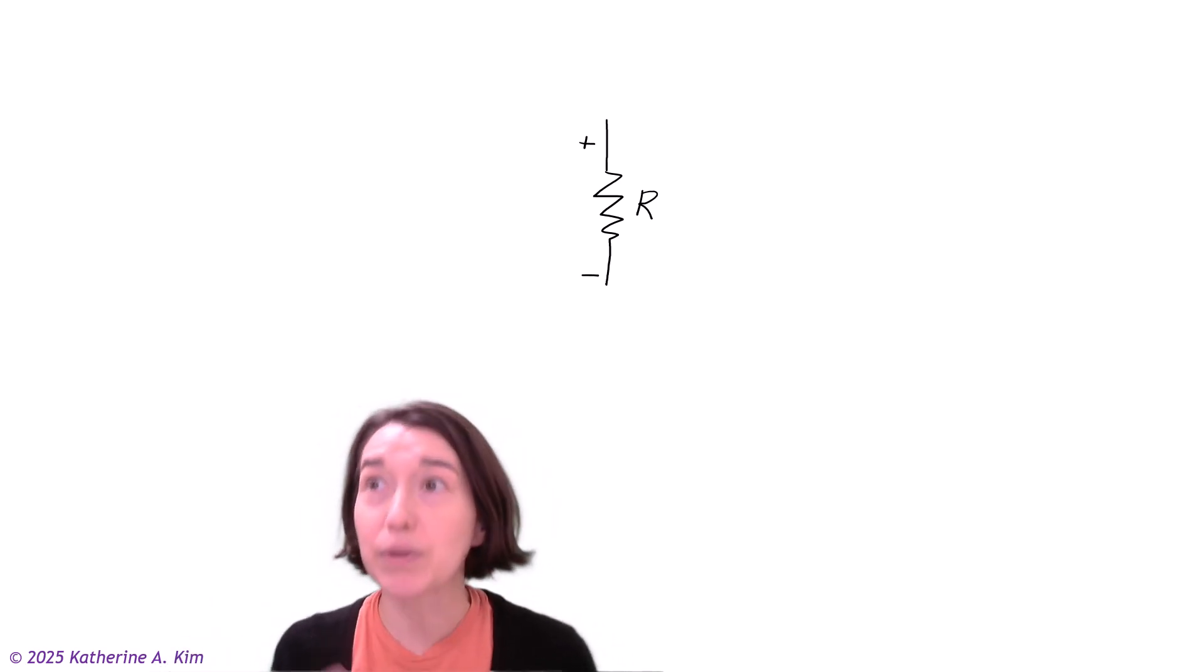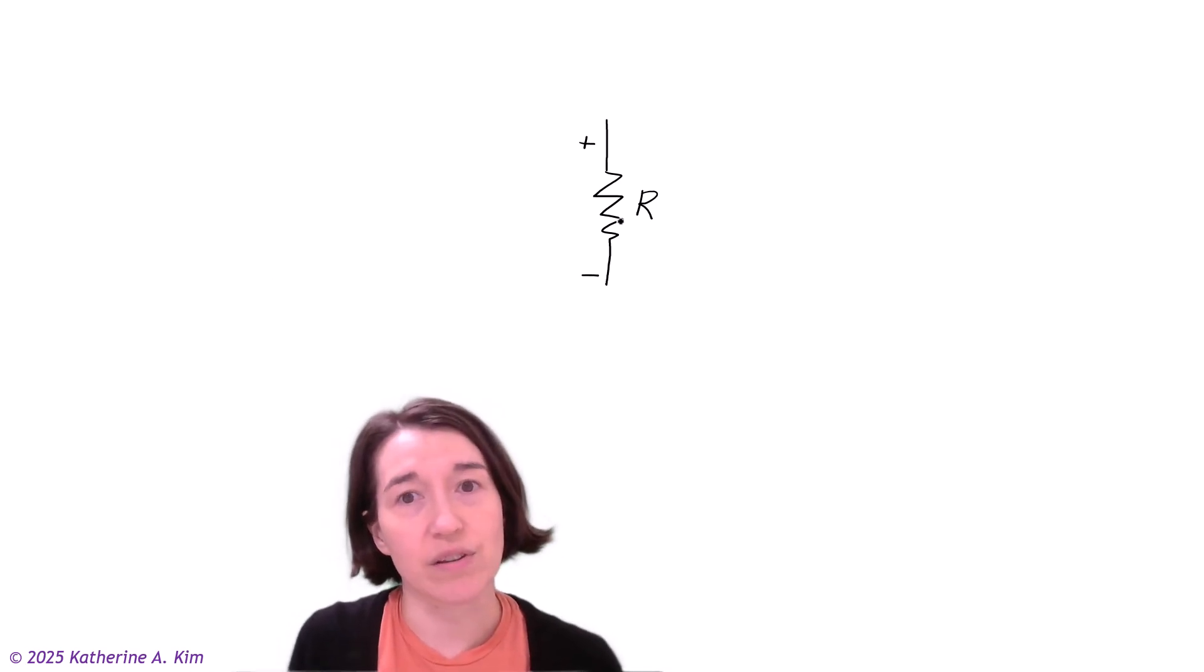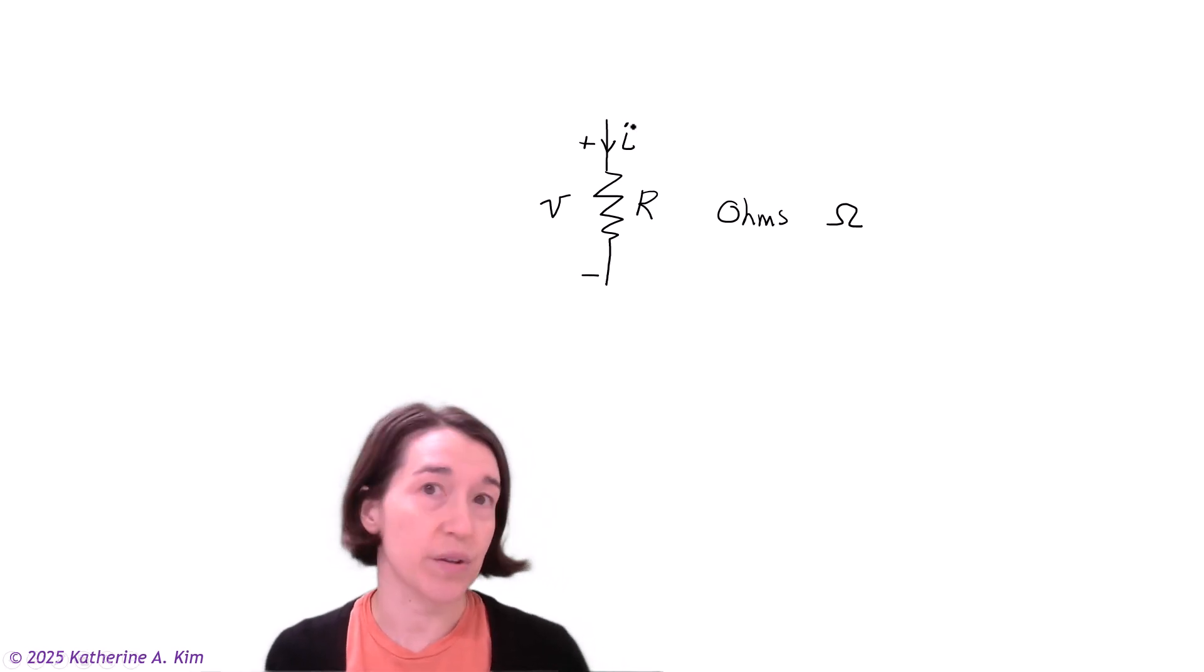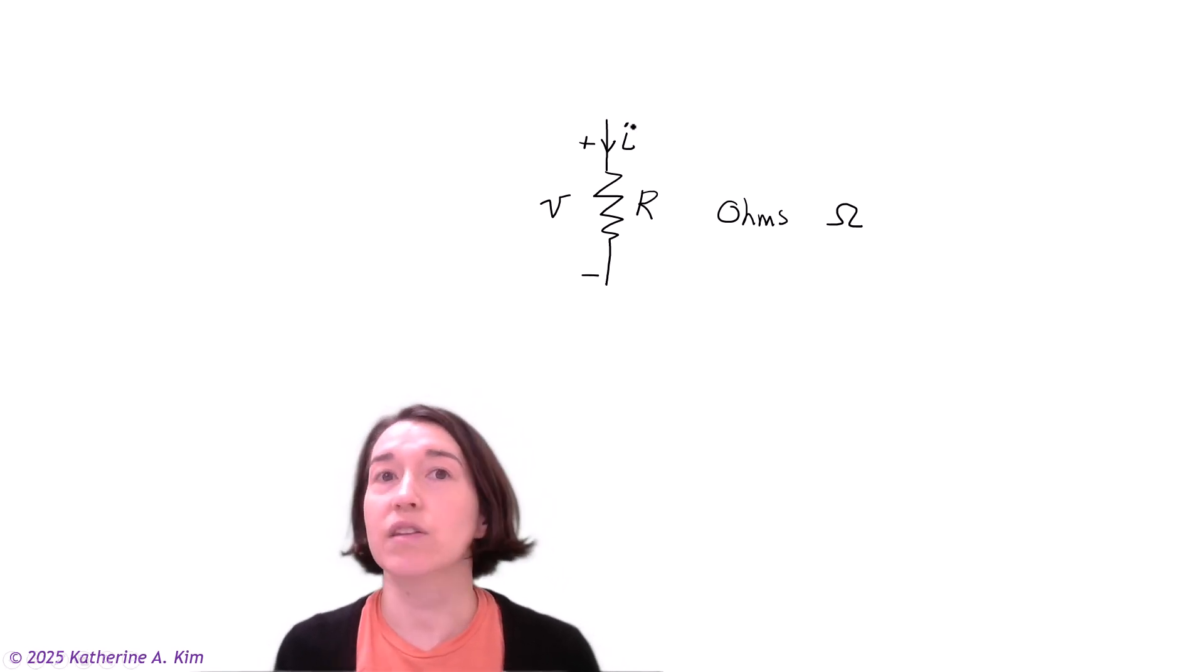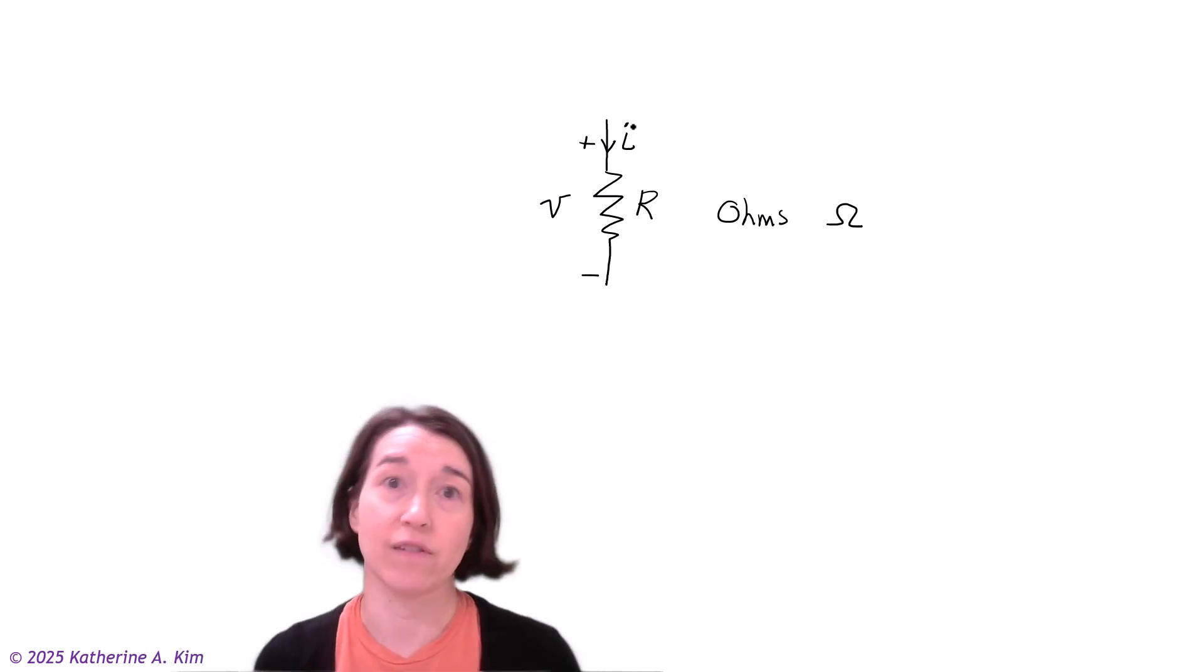What I've drawn here is a resistor. It has a resistance R, measured in ohms, written as omega. We have a voltage over it and we draw the current into it. This is the current through the resistor. Since this is a passive element, we draw the current going into the positive terminal.